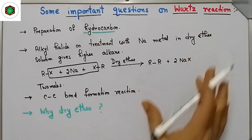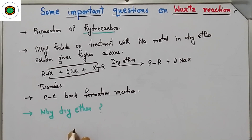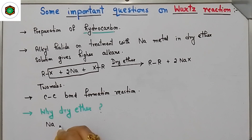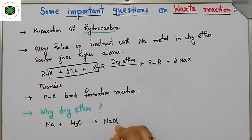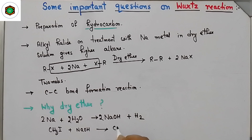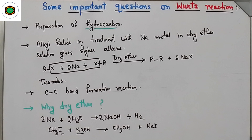Now we should know in Wurtz reaction why you have to use dry ether. Dry ether means moisture-free ether. Sodium is used in the reaction, and if water is present, we will get sodium hydroxide and hydrogen. When alkyl halide — suppose methyl iodide — reacts with sodium hydroxide, a nucleophilic substitution reaction takes place and we will get alcohol plus NaI. So we should use dry ether.